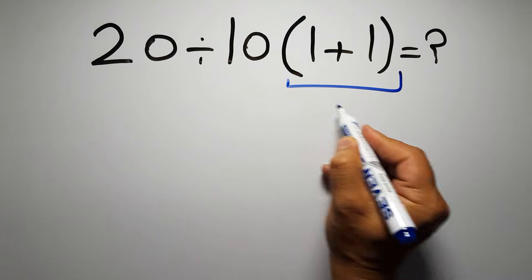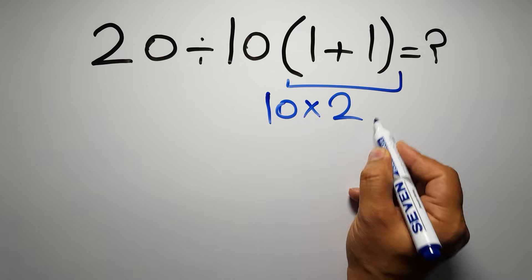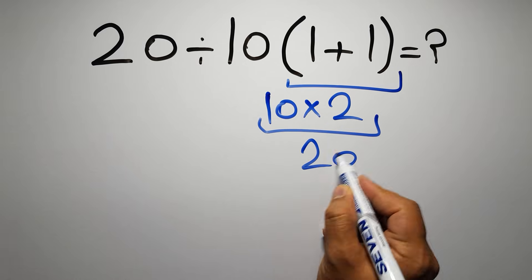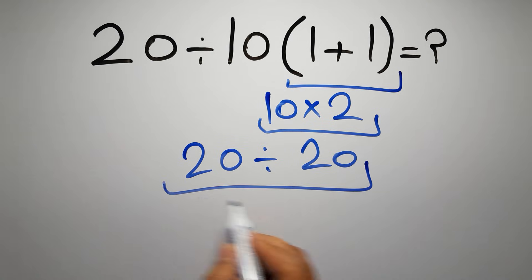1 plus 1 gives us 2 and 10 times 2 equals 20, so 20 divided by 20 is just 1.